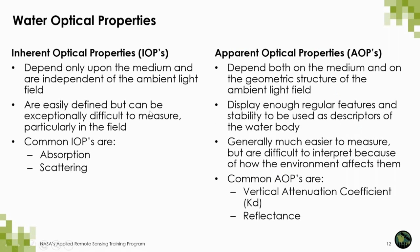Here is a short description of the differences between inherent and apparent optical properties. Inherent optical properties depend only upon the medium and are independent of the ambient light field. They are usually easily defined but can be exceptionally difficult to measure in the field. Typical IOPs include absorption and scattering. Apparent optical properties depend both on the medium and on the geometric structure of the ambient light field, but they display enough regularity and stability to be used as descriptors of the water body. They are generally much easier to measure but difficult to interpret because of how the environment affects them.